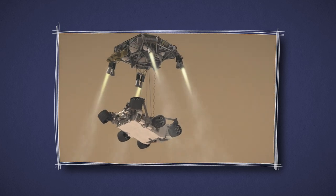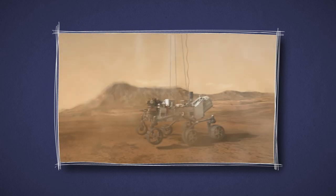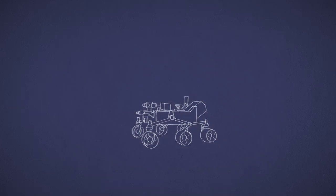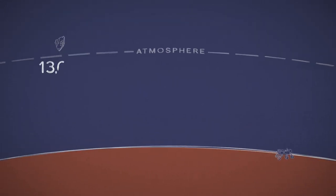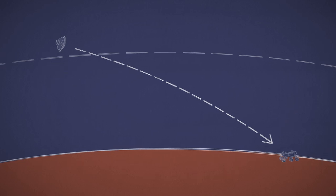Curiosity is the biggest, most capable Mars rover yet and needs a new type of landing to reach the ground safely. In this 7-minute trip to the surface of Mars, we have to slow down from over 13,000 miles an hour down to zero. Hundreds of things have to go just right.